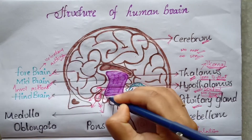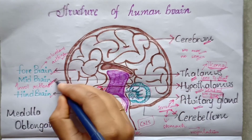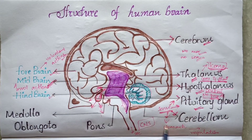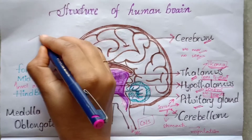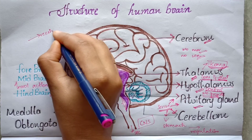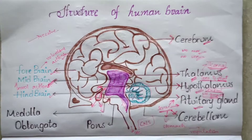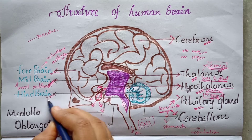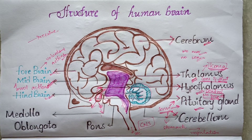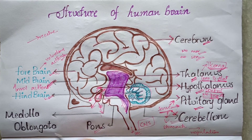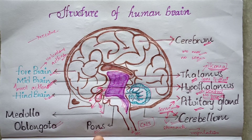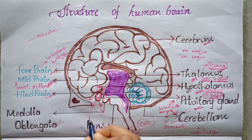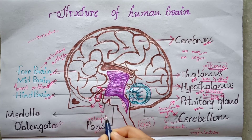Midbrain performs the involuntary actions, and the optic lobes receive visual input. The hindbrain is further classified as pons, cerebellum, and medulla oblongata. The pons relays sensory information, and if it is damaged, it may cause loss of all muscle functions.